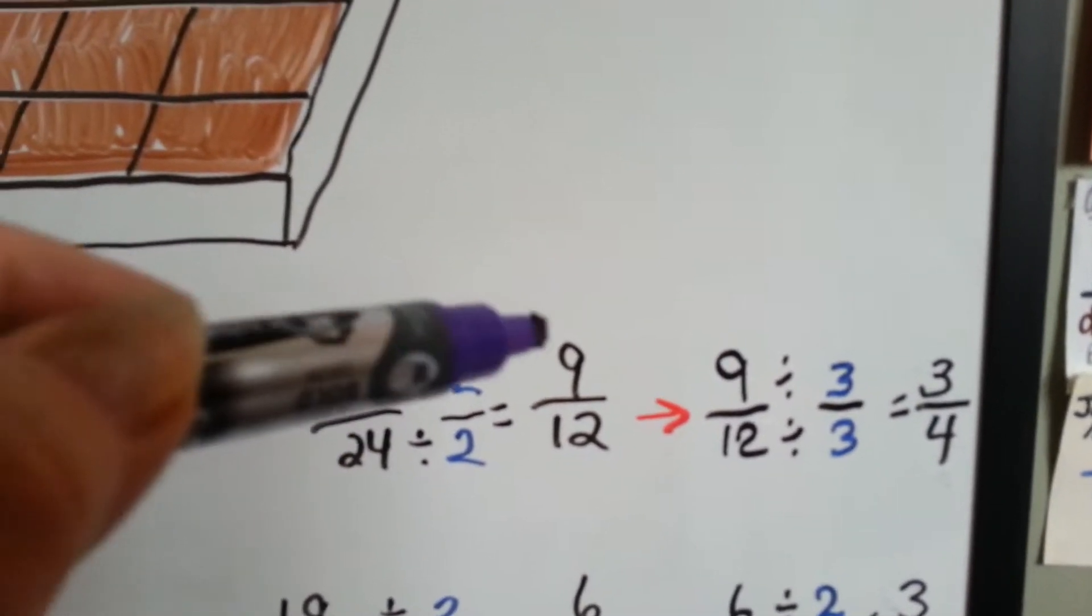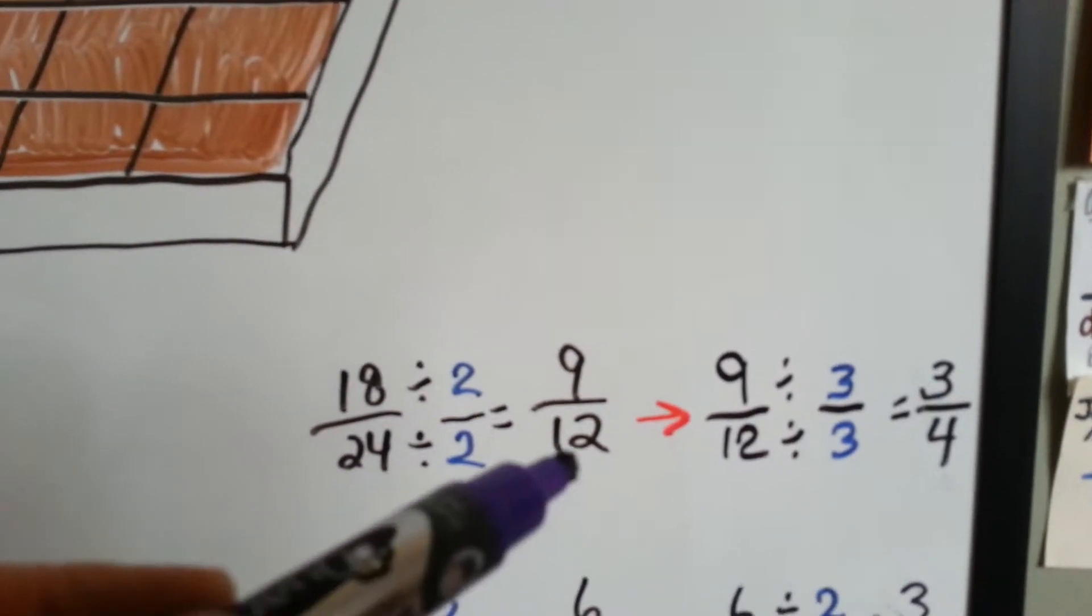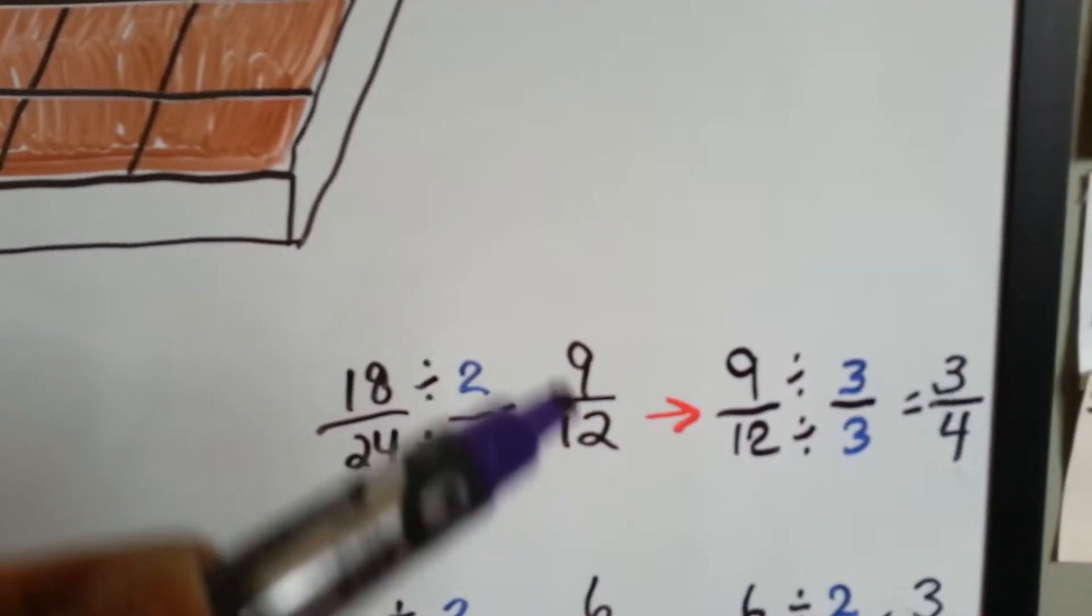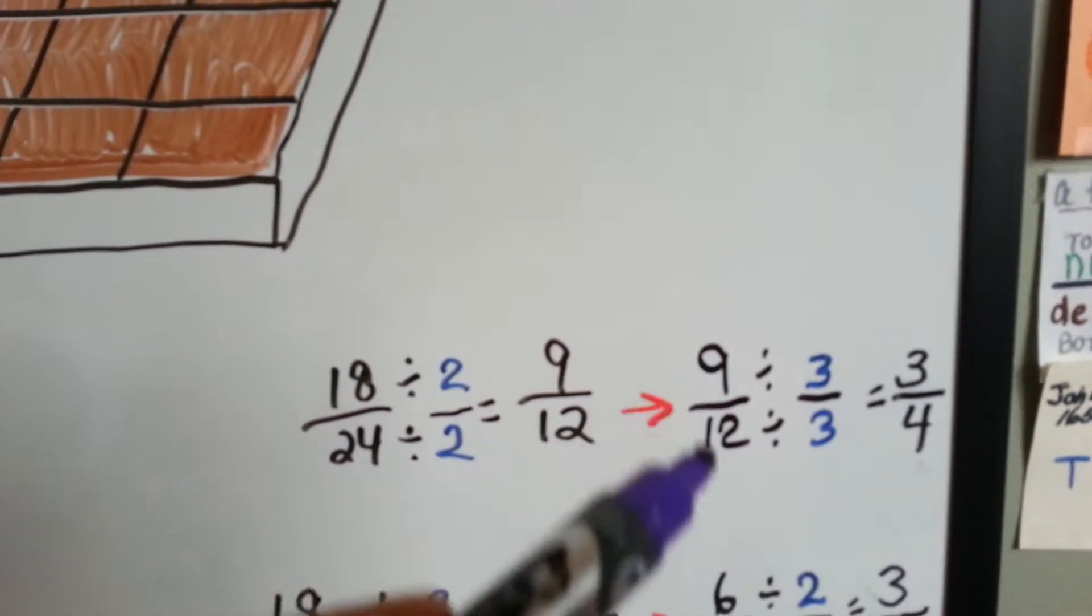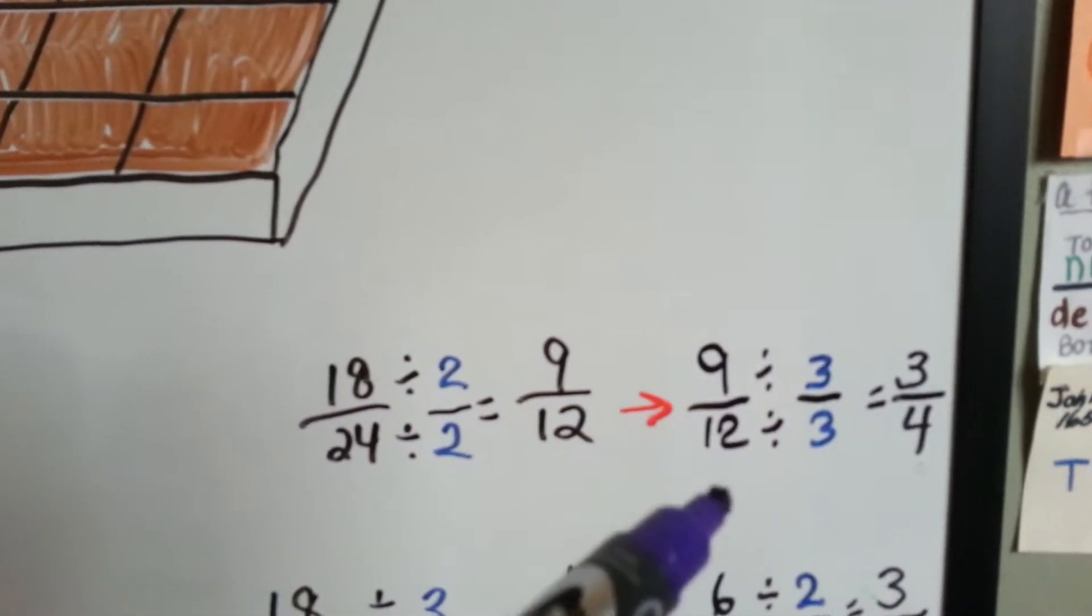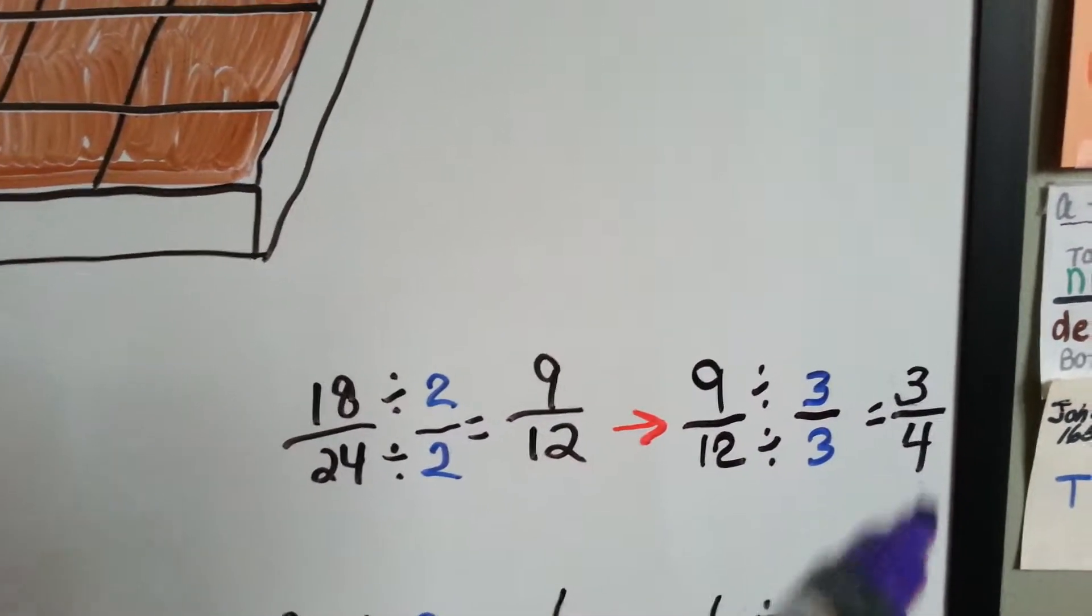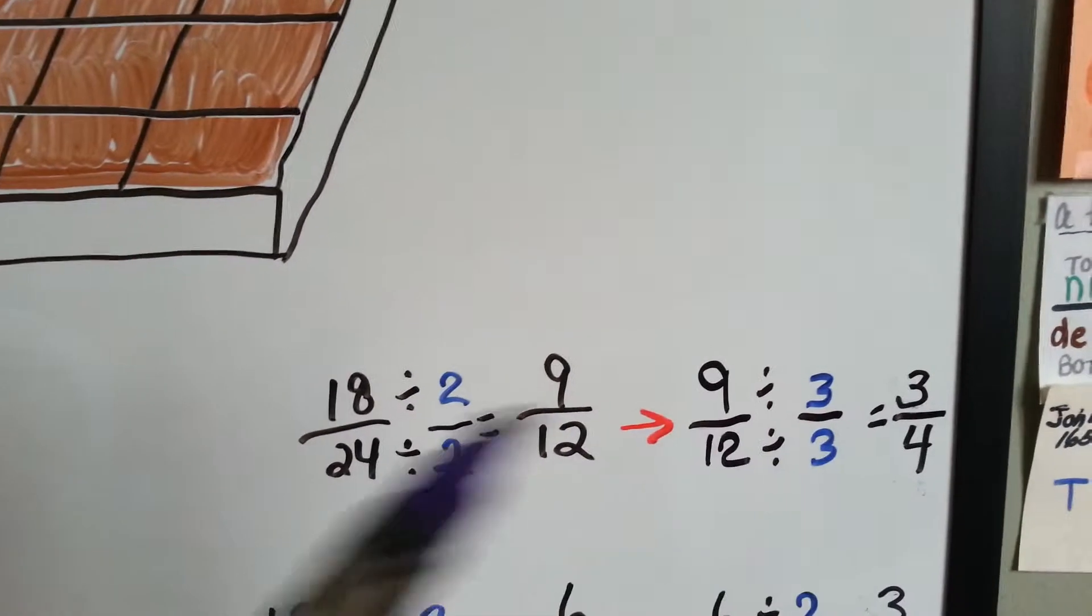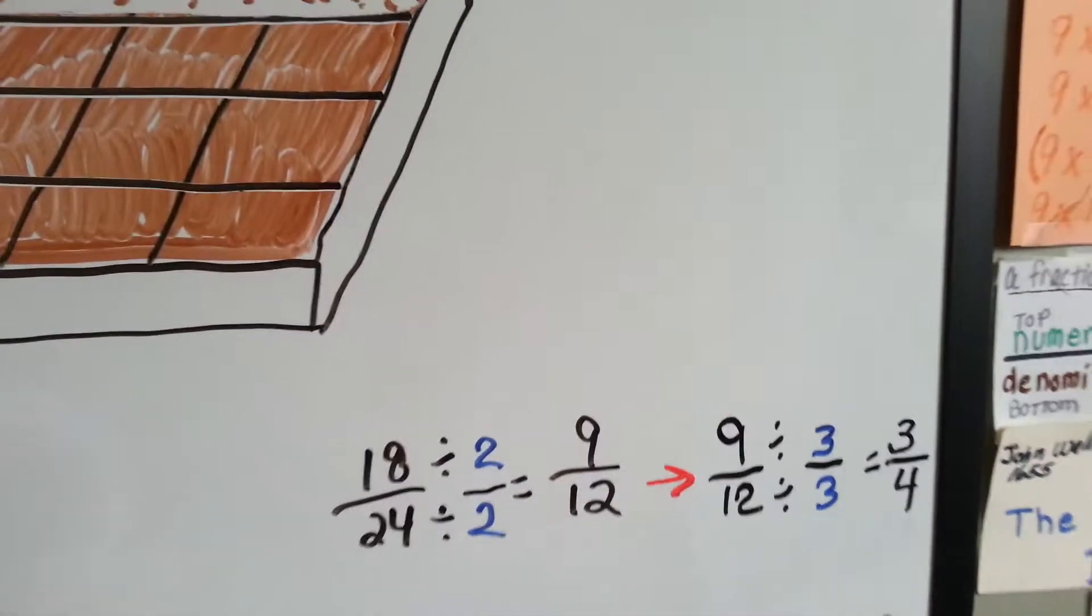We're going to divide the eighteen twenty-fourths by two. Eighteen divided by two is nine. Twenty-four divided by two, twenty-four cut in half is twelve. Look, it can still be reduced. Alright, what can go into the nine and twelve? A three. Nine divided by three is three. Twelve divided by three is four. That was double work. If we use the two, we're going to have to do it twice.